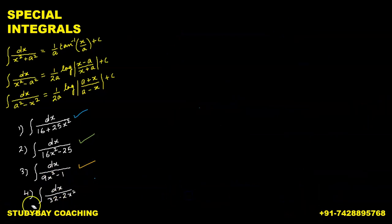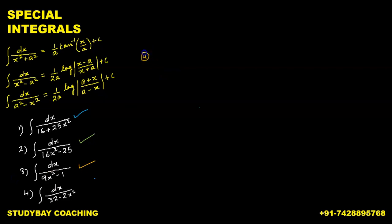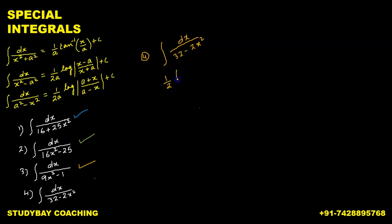The fourth problem is: integral of dx upon 32 minus 2x². We need to convert 2x² to x² form so that the integral fits the a² minus x² format. We simply divide numerator and denominator by 2, which gives us 1 upon 2 times the integral of dx upon 16 minus x², or equivalently 1 upon 2 times the integral of dx upon 4² minus x².